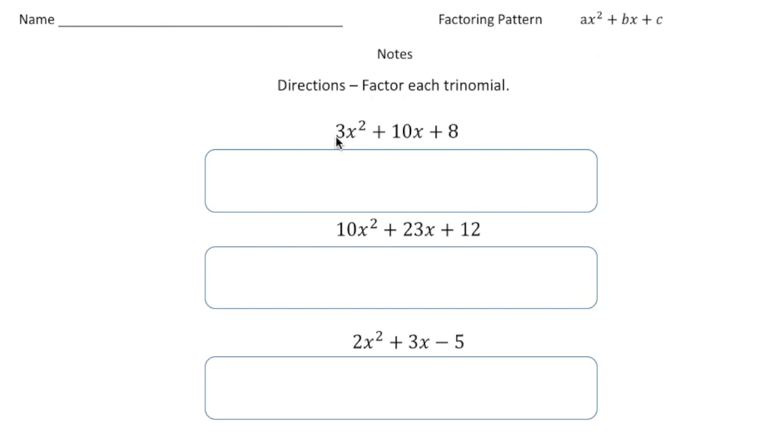So take a look at this first expression we want to factor. It's 3x squared plus 10x plus 8. And this is a little more advanced now because notice we have a front term that's 3x squared. Before now you've always seen just an x squared there. So let's draw our parentheses.